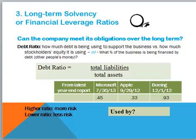The first long-term solvency or leverage ratio is the debt ratio, which helps answer the question: can the company meet its obligations over the long term? The debt ratio helps answer the question of how much debt is being used to support the business versus shareholders' equity, or what I like to think of as other people's money.